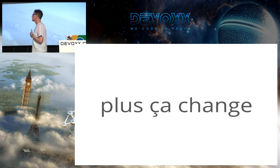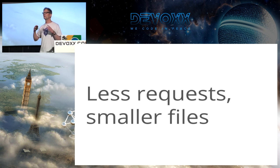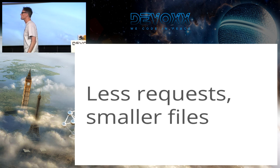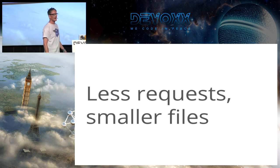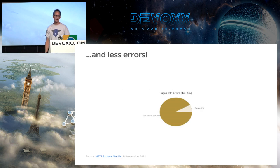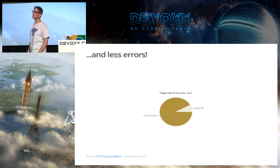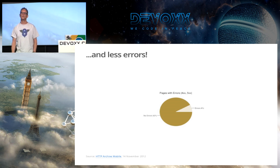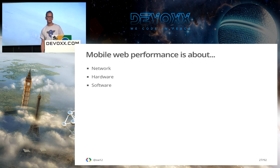The good news is that it's the same old, same old — it's like 1999 all over again. The most important thing is fewer requests, smaller file size. One thing I discovered looking at HTTP Archive Mobile is that we've still got to reduce the number of errors — we're still getting a lot of errors when there are requests for pages, and that's a major dent in mobile performance.